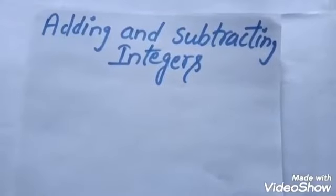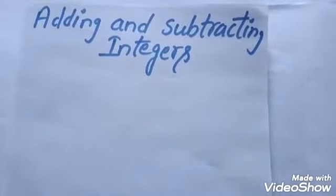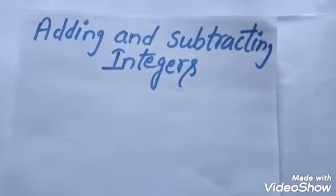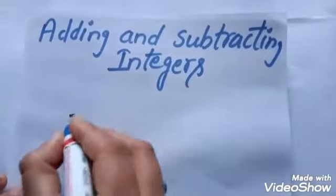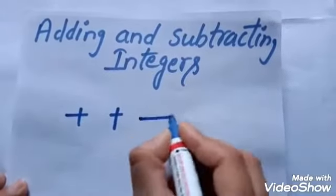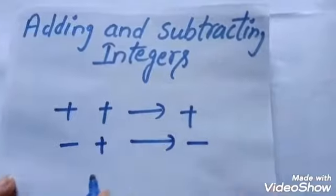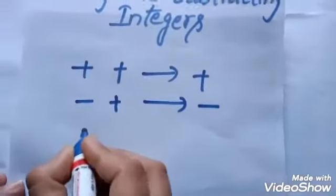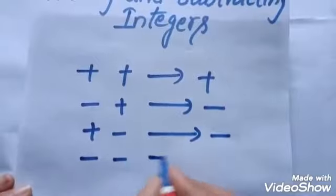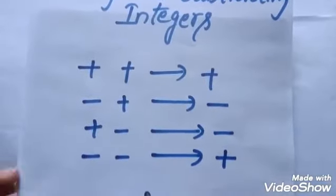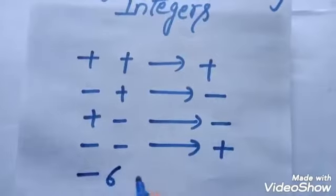My next topic is adding and subtracting integers. There are four rules to adding and subtracting integers. These rules are: plus plus is plus, minus plus is minus, plus minus is minus, and minus minus is plus.